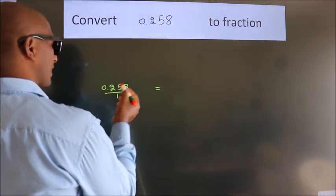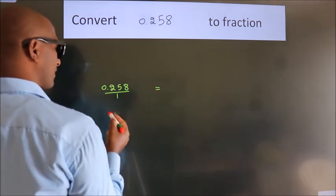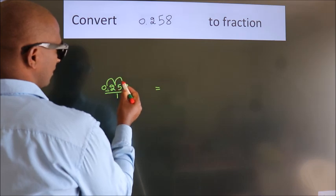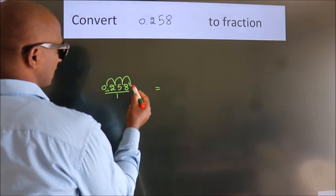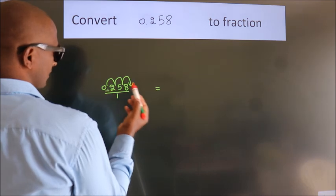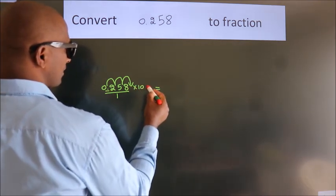To convert this to fraction, for that we have to move this decimal after 1, 2, 3 numbers. To move this decimal after 3 numbers, for that we have to multiply this with 1000.